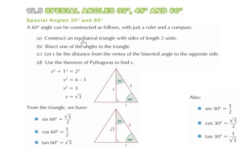Part A: Construct an equilateral triangle with sides of length 2 units. An equilateral triangle has 3 equal sides and 3 equal angles. The 3 equal angles must be 60 degrees each, because 180 divided by 3 is 60. Here is our equilateral triangle — each of the angles is 60 degrees and each of the sides measures 2 units.